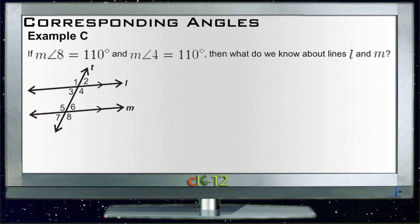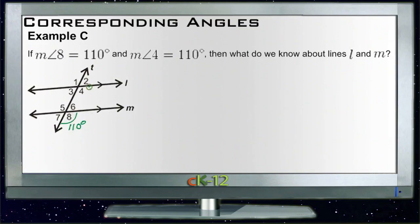Example C says if the measure of angle 8 is 110 degrees and the measure of angle 4 is 110 degrees, then what do we know about lines l and m? Well, we know about lines l and m because they're marked that way, but l and m would be parallel.